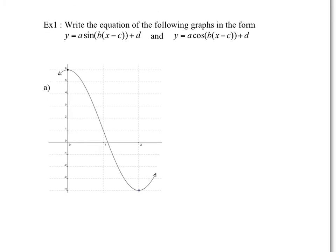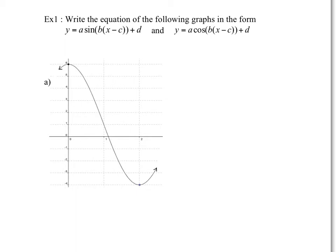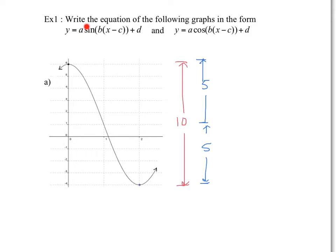In this first example, you have to try to get as much information from the graph as possible. You can see the maximum is 6 and the minimum is negative 4. There's a distance of 10 between the max and the min, and the amplitude will always be half of that. So we have 5 going to a midpoint, and another 5 going to a midpoint. The amplitude relates directly to the value of A, so A equals 5.